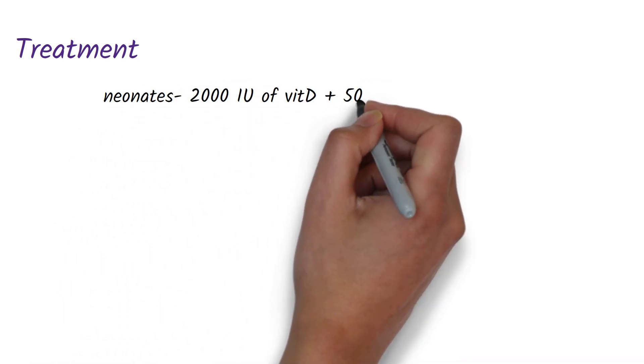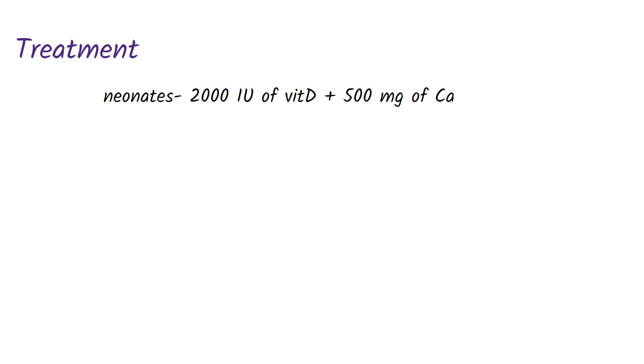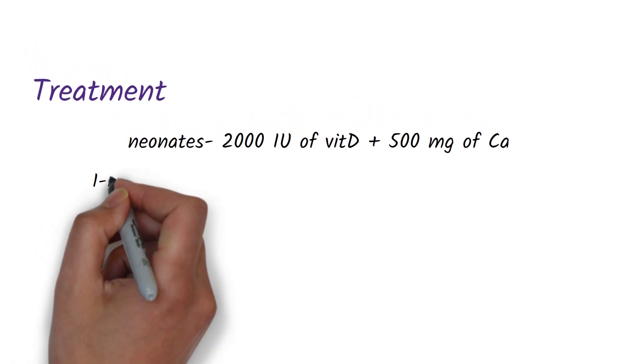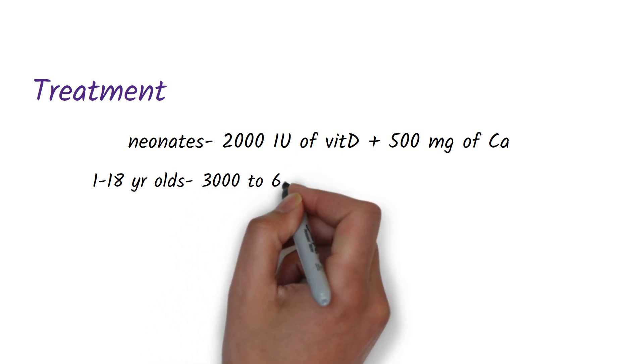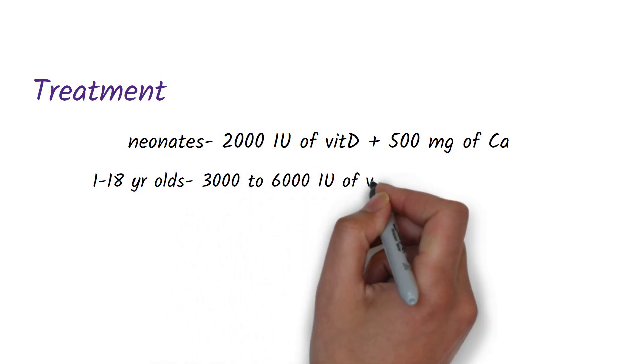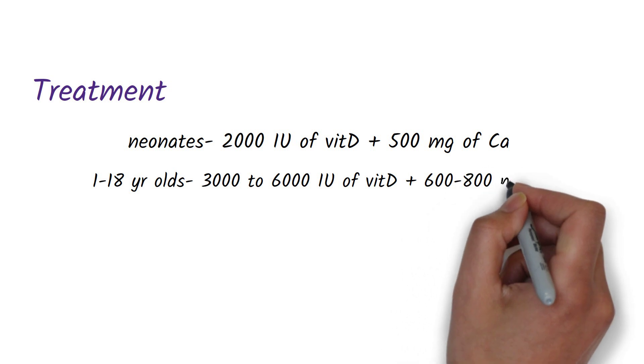The treatment of rickets is with vitamin D and calcium supplementation. Neonates should be given around 2,000 international units of vitamin D with 500 milligrams of calcium per day for three months, and this will be followed by maintenance doses. One to 18 year olds should be given 3,000 to 6,000 international units of vitamin D with 600 to 800 milligrams of calcium per day.